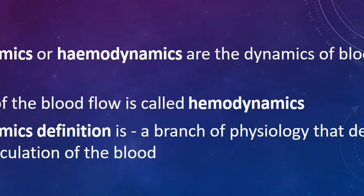In Tetralogy of Fallot we have different defects. First is stenosis of the pulmonary artery. Next is overriding of the aorta. There is a large VSD. And apart from that we have right ventricular hypertrophy. So now we are going to study what is the hemodynamics of Tetralogy of Fallot, which has these four defects: pulmonary stenosis, ventricular septal defect, overriding aorta, and right ventricular hypertrophy.